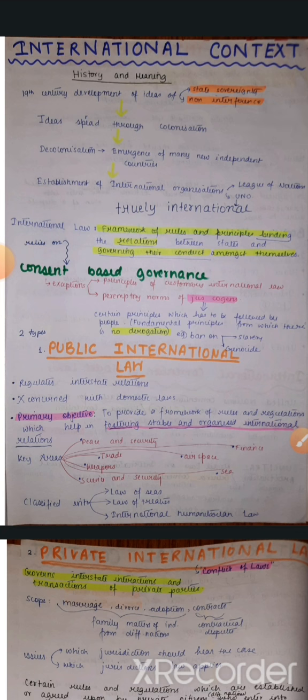The primary objective is to provide a framework of rules which help in fostering stable and organized international relations. The key areas — scope — include peace and security, air, space, sea, weapons, and international crimes.